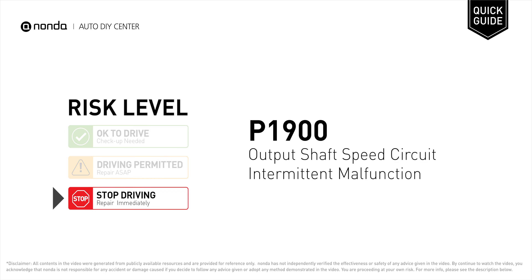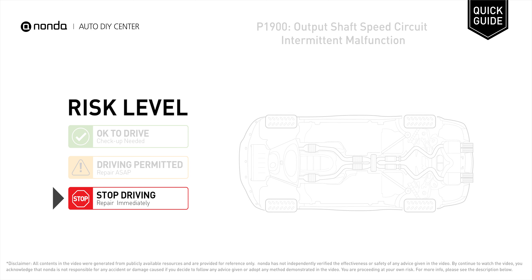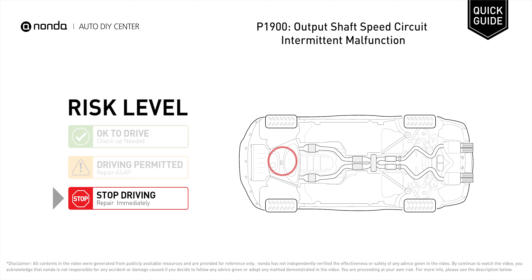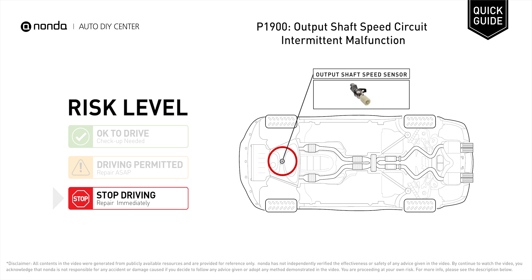P1900 is a diagnostic trouble code for output shaft speed circuit intermittent malfunction. Under this circumstance, stop driving and repair your vehicle immediately. It indicates that the output shaft speed sensor signal to the PCM is irregular or interrupted.